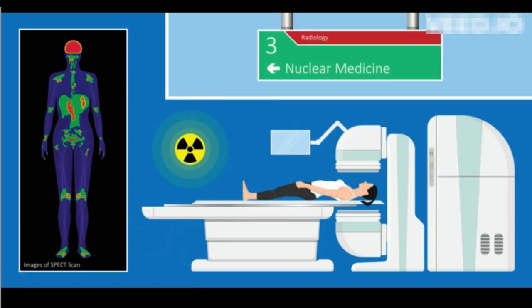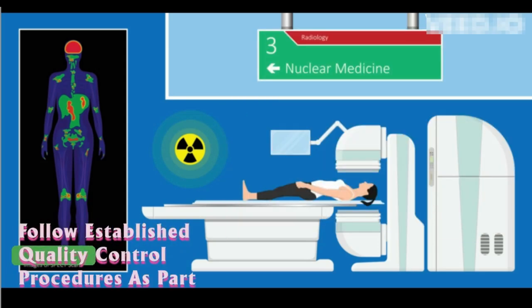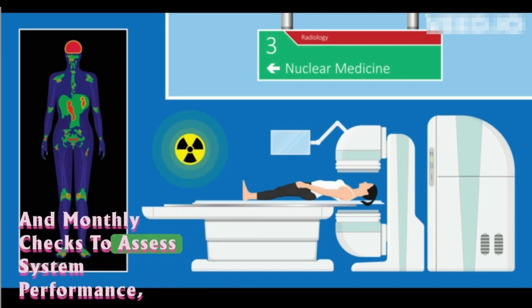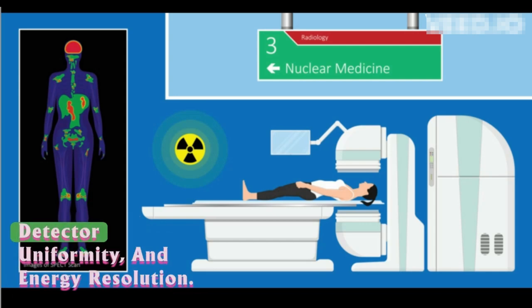Quality control procedures: Follow established quality control procedures as part of routine maintenance. This includes daily, weekly, and monthly checks to assess system performance, detector uniformity, and energy resolution.